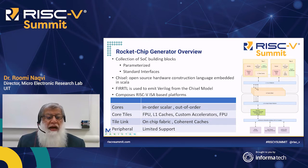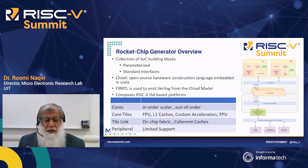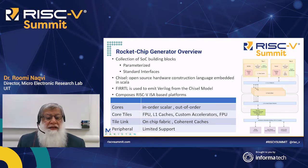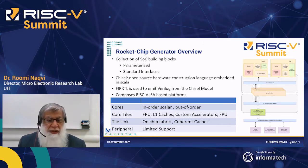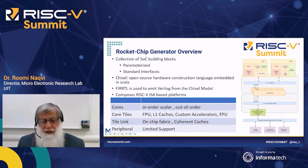The basic features of the generator include an in-order five-stage core called the rocket core, and an out-of-order core referred to as BOOM. One can form core tiles with L1 caches, custom accelerators, and a floating point unit. There is a TileLink fabric that enables integration of coherent caches, and some limited peripheral support like GPIOs and UARTs, though that area is a bit lacking.